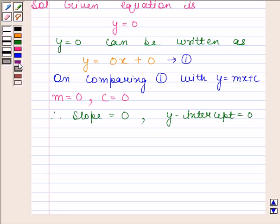Hence, the given equation in slope-intercept form is y equals 0x plus 0. Its slope is 0 and its y-intercept is also 0. This is our required answer.